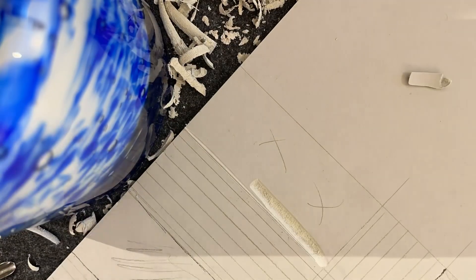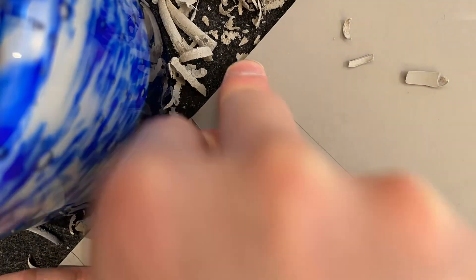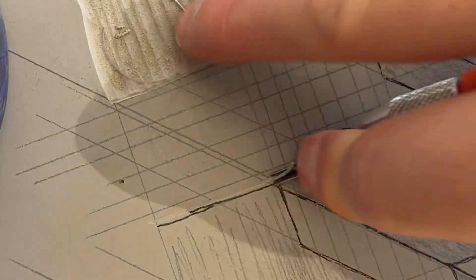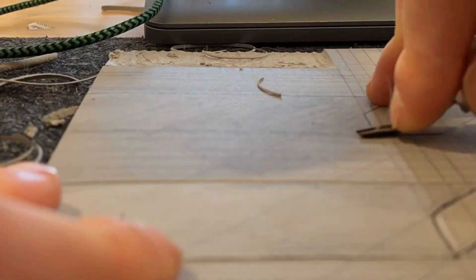To stop any stray cuts I gouge very thin lines into the edge of the design and this will prevent my lino blade cutter from carrying on when I'm creating the cut lines.